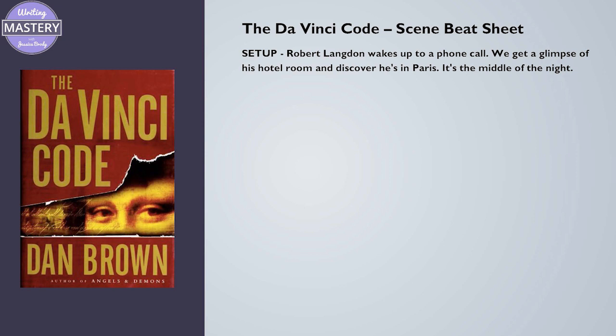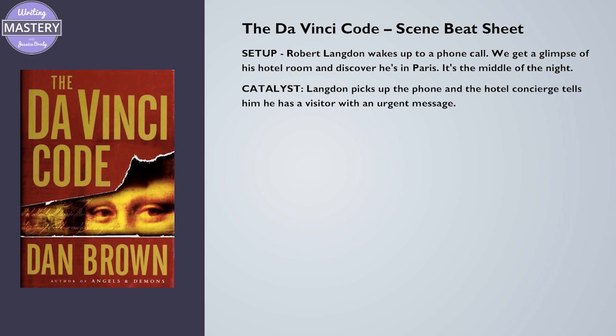Beat one: Setup. Robert Langdon wakes up to a phone call. We get a glimpse of his hotel room and discover that he's in Paris — it's the middle of the night. Beat two: Catalyst. Langdon picks up the phone and the hotel concierge tells him that he has a visitor with an urgent message.